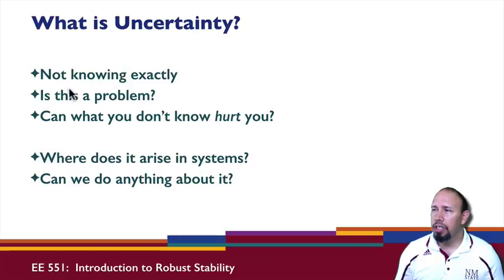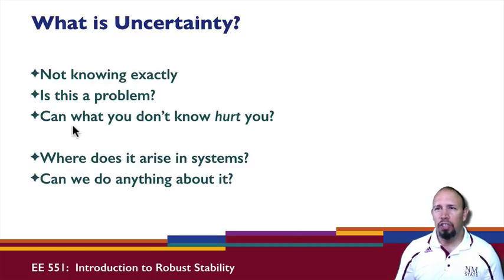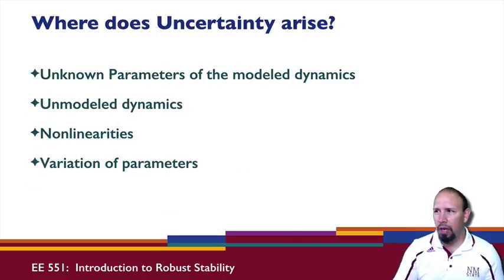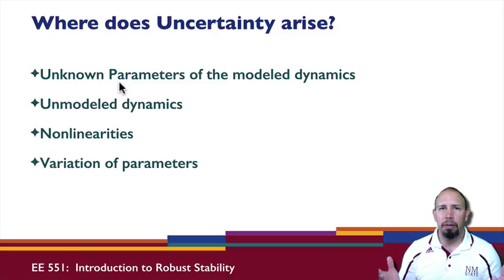What is uncertainty? Basically, it's not knowing exactly. The reason this is a problem is that what you don't know can, indeed, hurt you. Some important questions are: where does uncertainty arise in a system, and what can we do about it? First, it arises in terms of unknown parameters of the modeled dynamics.